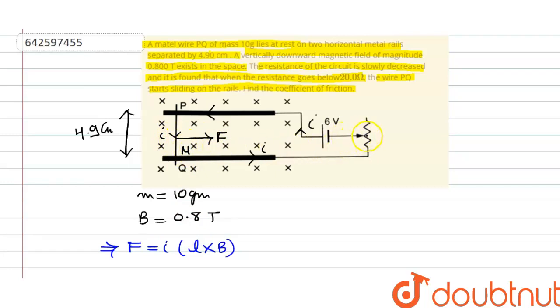So now what happens is that we are decreasing the resistance of this circuit. So as we reach resistance equals to 20 ohm, then this wire starts sliding on the rails.